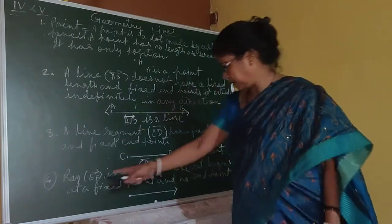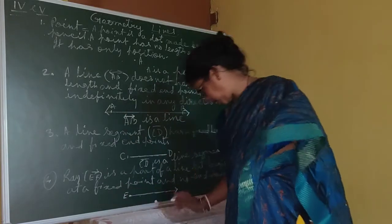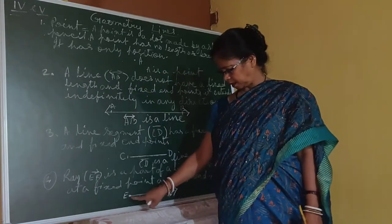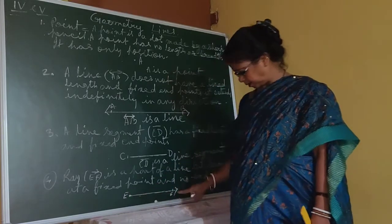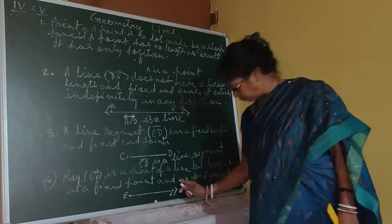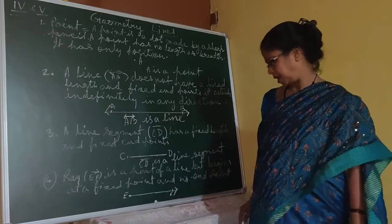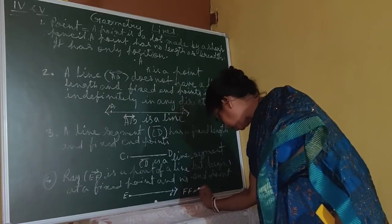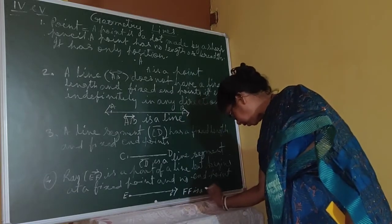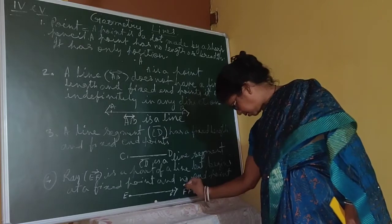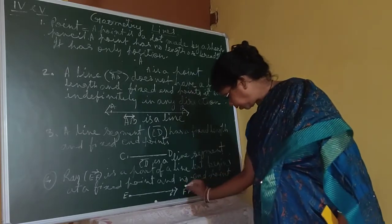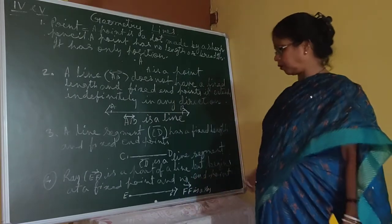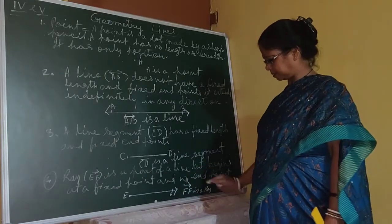The name here is EF. E is the fixed point — that's why the name starts from E. Here the ray is extending, so you write one line on top with the name EF and one arrow on the F side. EF is a ray. The sign for a ray has one fixed point and one arrow, meaning it extends in one side only — this side it will not extend.